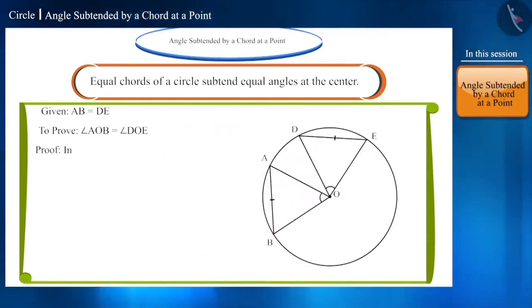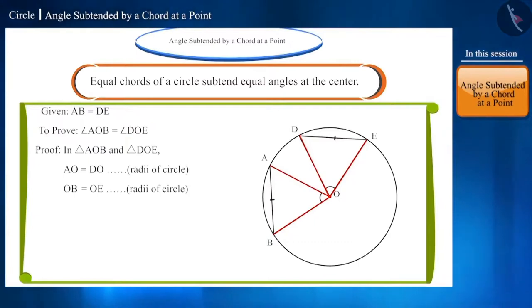Friends, look at triangles AOB and DOE. These are isosceles triangles because their sides are the radii of this circle which are equal, and we are given that AB and DE are also equal.